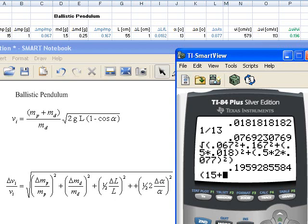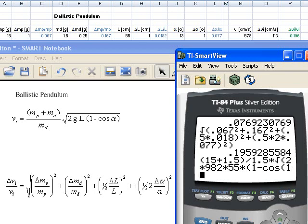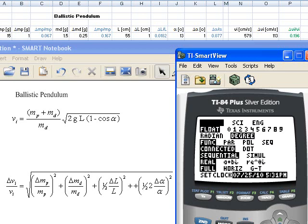15 plus 1.5 divided by 1.5 times the square root of 2 times, and I have to be careful, I am in centimeters, so 982 centimeters per second squared, times the length which is 55, times parentheses 1 minus cosine of 13 degrees. And then I close the parentheses on the cosine, the parentheses around the cosine, and the parentheses on the square root, and before I hit enter, I'm going to check the mode if I am in degrees. I am.